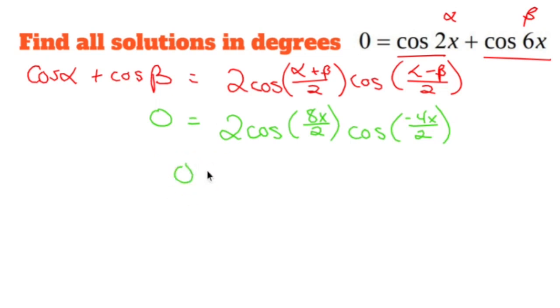And this ends up giving me 0 equals 2 cos 4x cos negative 2x.